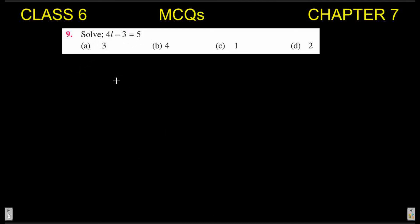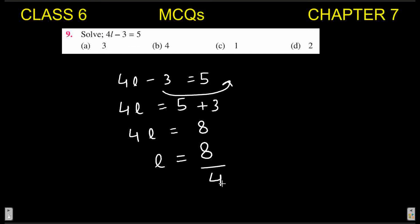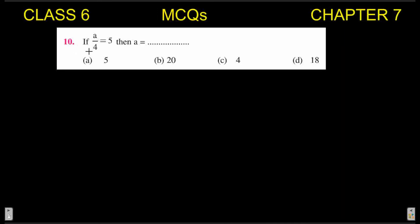Next MCQ: solve 4y − 3 = 5. Using transposition, shift −3 to the right-hand side, it becomes +3. So 4y = 5 + 3 = 8. Now shifting 4 to the right-hand side, it goes to the denominator: y = 8/4 = 2. Two is in option D, so D is your correct answer.